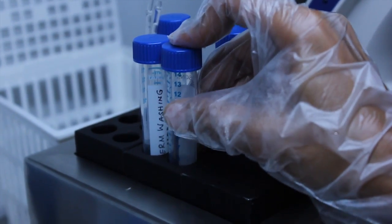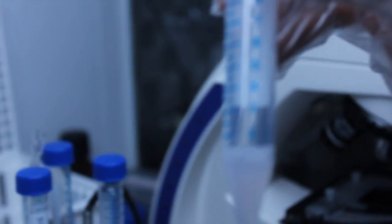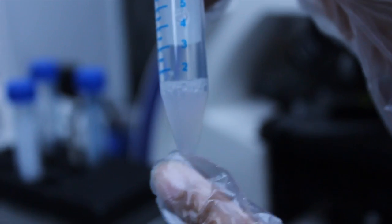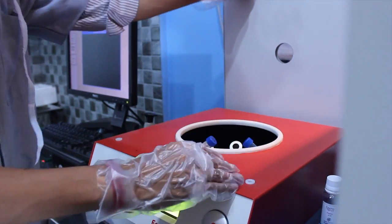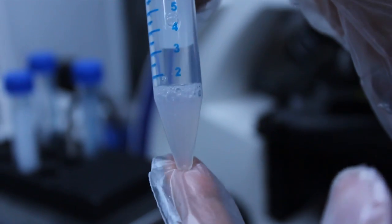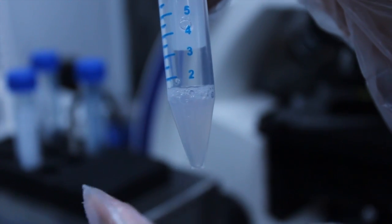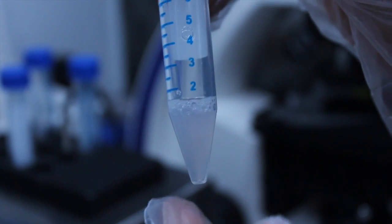This is a semen sample mixed with washing media. We will centrifuge this and collect the sperms as a pellet at the bottom of the tube. Then we can add the freezing media to it.